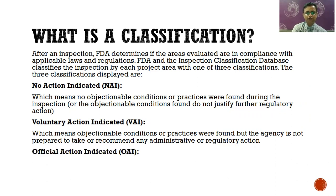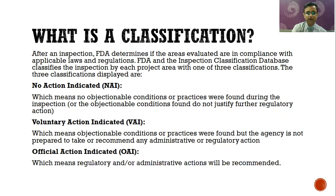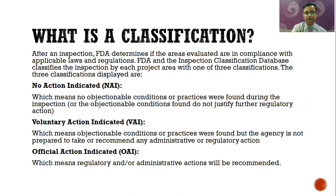The third and most severe classification is Official Action Indicated (OAI), which means regulatory and/or administrative action will be recommended. FDA identifies that the company is violating their laws and regulations and the observations are having an impact on the product and patient safety. They will force and recommend administrative actions, which can include conducting a study, doing a risk assessment, or hiring a consultant to help the organization comply with the observations. This is the classification of the outcome of FDA inspections. Thank you.